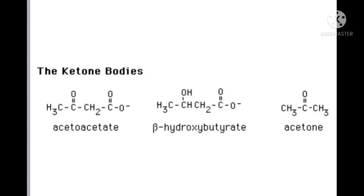The three ketone bodies are: acetoacetate, which is the primary ketone body; beta-hydroxybutyrate and acetone, which are the secondary ketone bodies. So we have three ketone bodies — one is acetoacetate, which is the primary ketone body, and beta-hydroxybutyrate and acetone, which are the secondary ketone bodies.